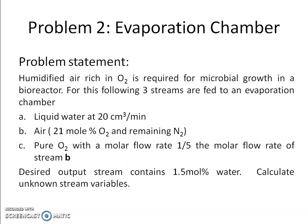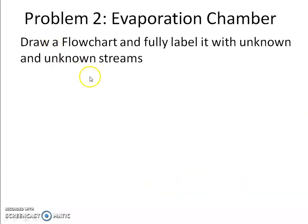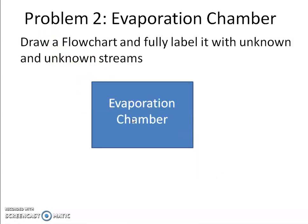Now let's look at another problem — an evaporation chamber. You are trying to supply humidified air rich in oxygen to a bioreactor. To produce this humidified air, an evaporation chamber is used in which three streams are entering: liquid water, air, and a pure oxygen stream. It is given that the molar flow rate of the pure oxygen stream is one-fifth of the molar flow rate of the air stream. The desired output is 1.5 mole percent of water in the outgoing stream.